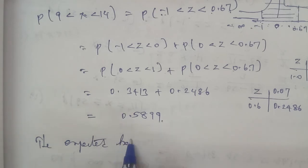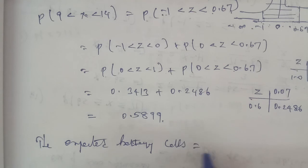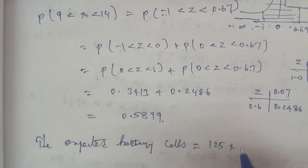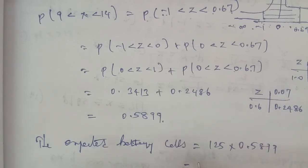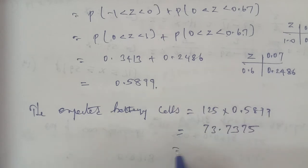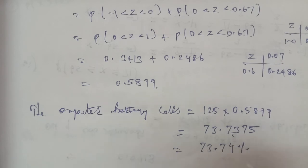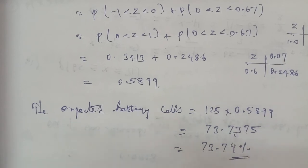Therefore P(9 < X < 14) = 0.3413 + 0.2486 = 0.5899. Expected battery cells with life between 9 and 14 hours = 0.5899 × 125 = 73.7375, approximately 73.74. Thank you.